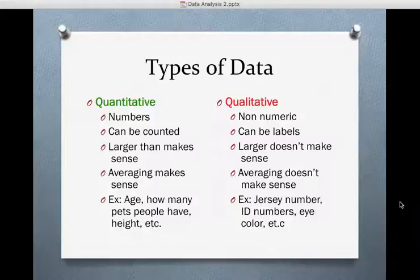Eye color and other things that you might collect - even though there could be a certain number of these things, like we have five people with hazel and three people with brown eyes, the data itself is qualitative.